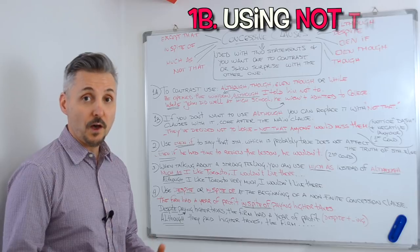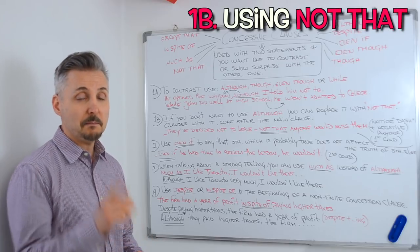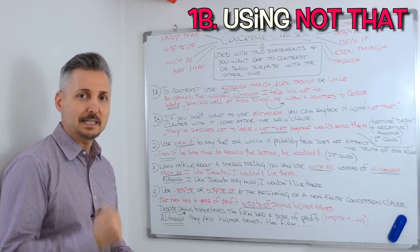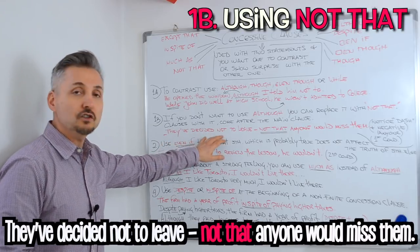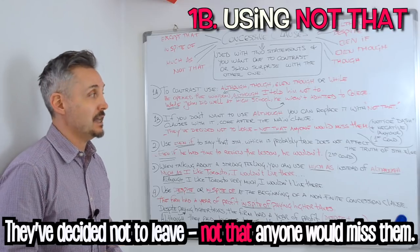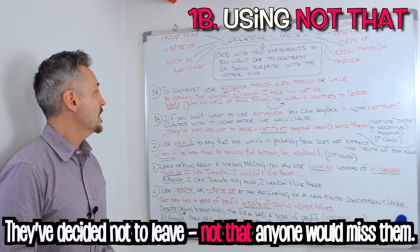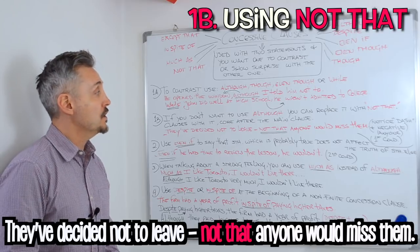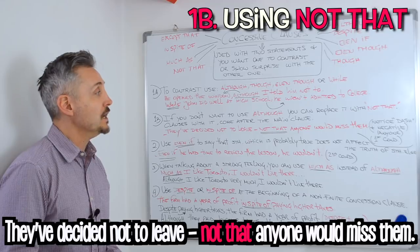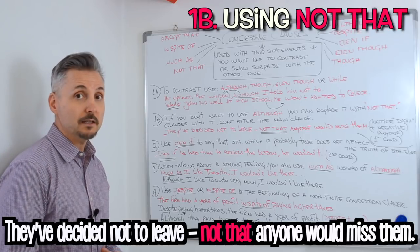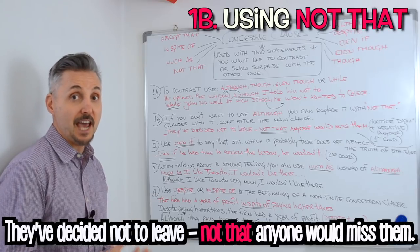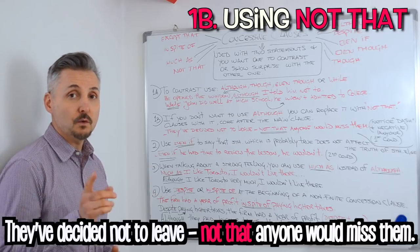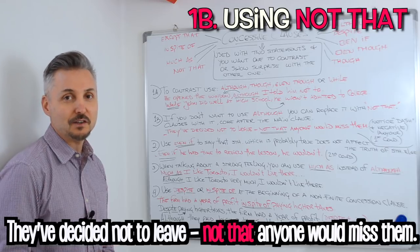What about if you don't want to use although? You can replace it with 'not that.' But pay attention, because we need to change the sentence — the sentence has to be negative. Let's take a look at my example: They've decided not to leave — not that anyone would miss them. The dash is important here. 'Not that' introduces the concessive clause, and 'not that anyone would miss them' is a negative statement because we have 'anyone.' It's also the first conditional. If you wish to watch a lesson on the first conditional, you may click here.